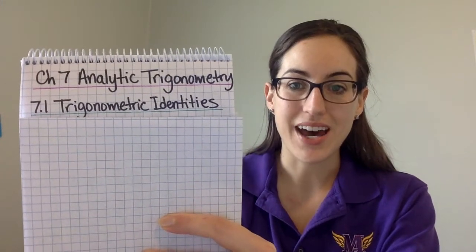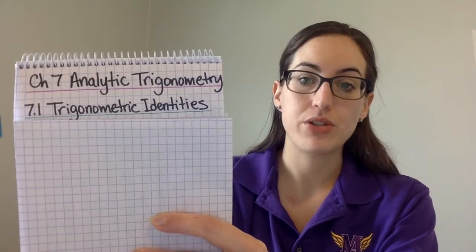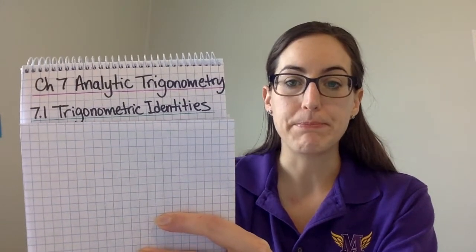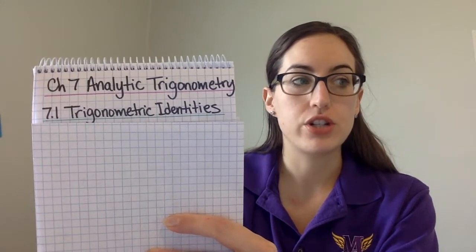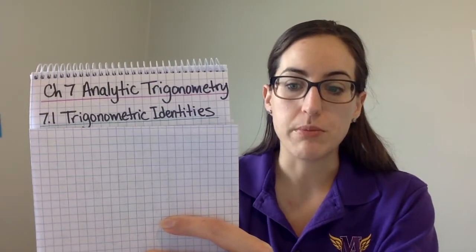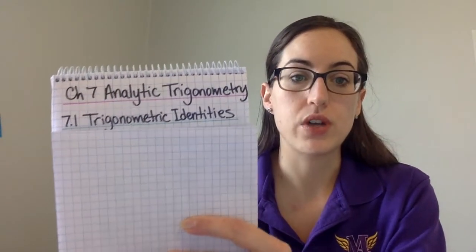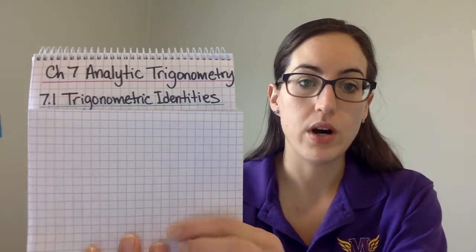Morning pre-calculus. We are starting chapter 7, analytic geometry. We're going to get more into the trigonometric functions, the algebra of it. Chapter 6 was more trig functions of angles.